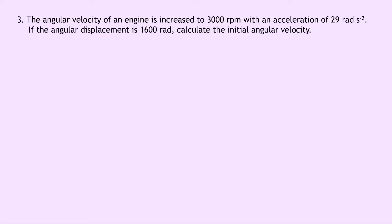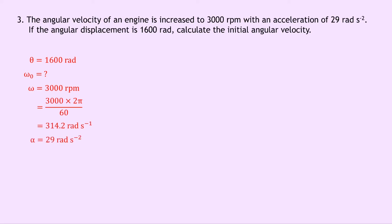Question 3 says that the angular velocity of an engine is increased to 3,000 rpm — that's revolutions per minute — with an acceleration of 29 radians per second squared. If the angular displacement is 1,600 radians, calculate the initial angular velocity. We know that angular displacement theta is 1,600 radians. We don't know the initial angular velocity — that's what we're trying to find. The final angular velocity is 3,000 revolutions per minute. To convert this into radians per second, we multiply by 2π to convert revolutions into radians, then divide by 60 to get radians per second. This gives us 3,000 × 2π ÷ 60 = 314.2 radians per second. The angular acceleration is 29 radians per second squared, and we don't know the time.